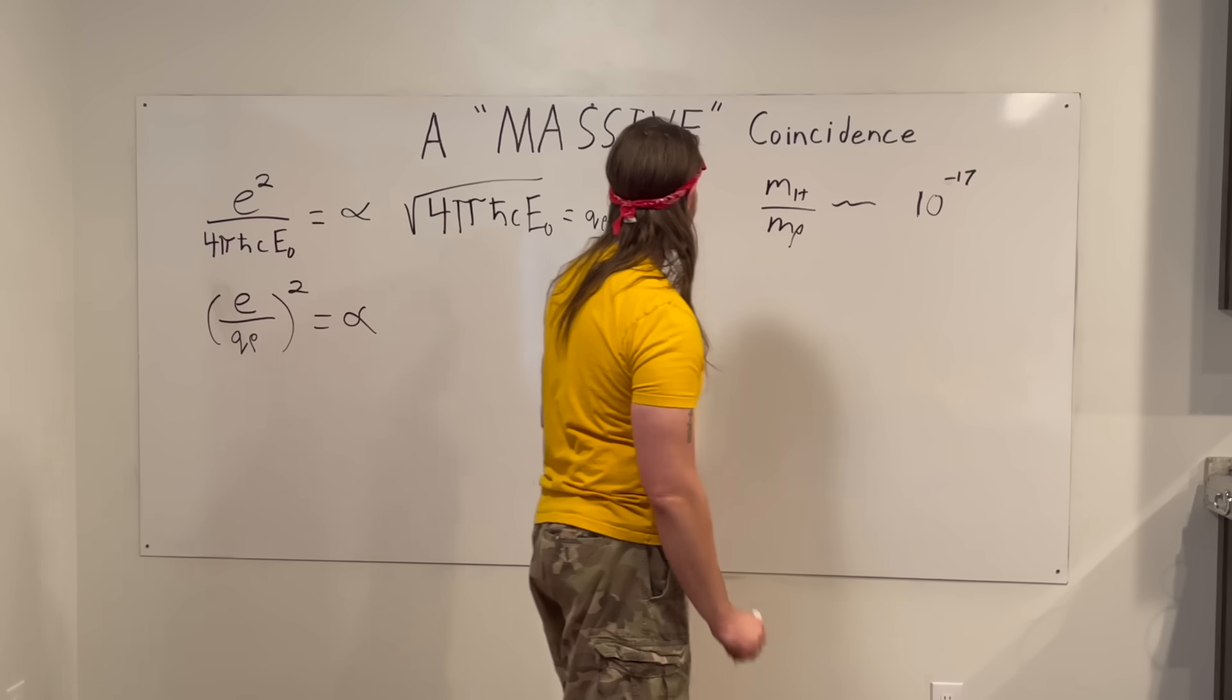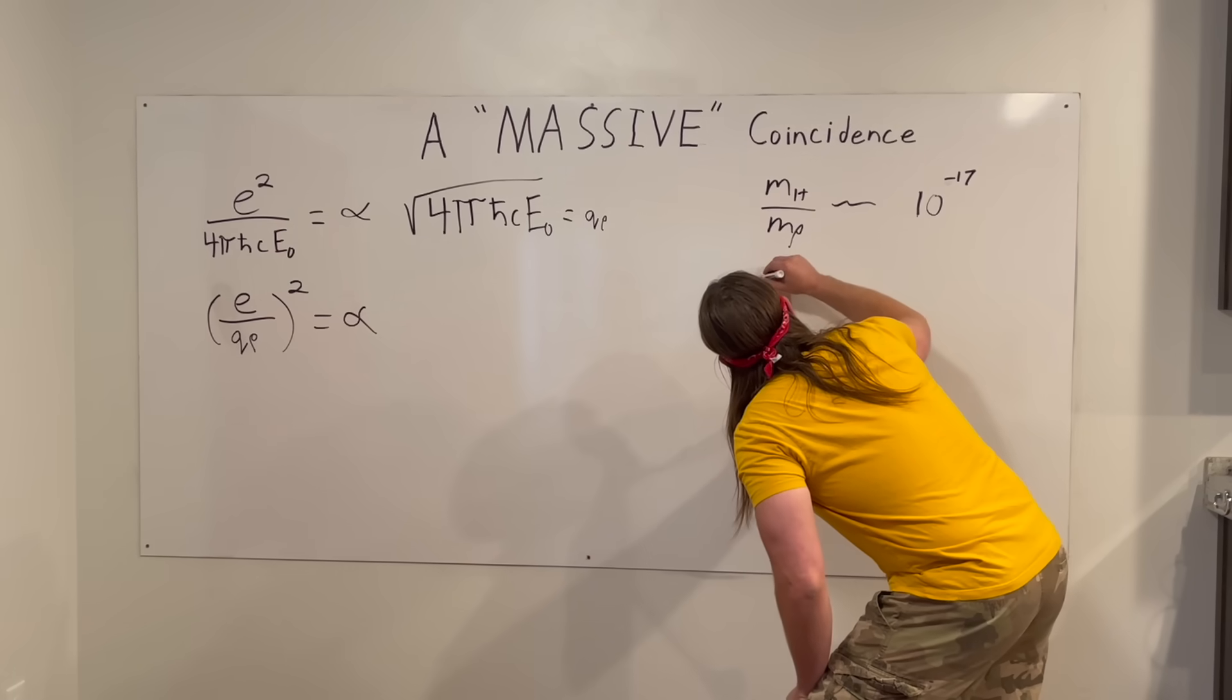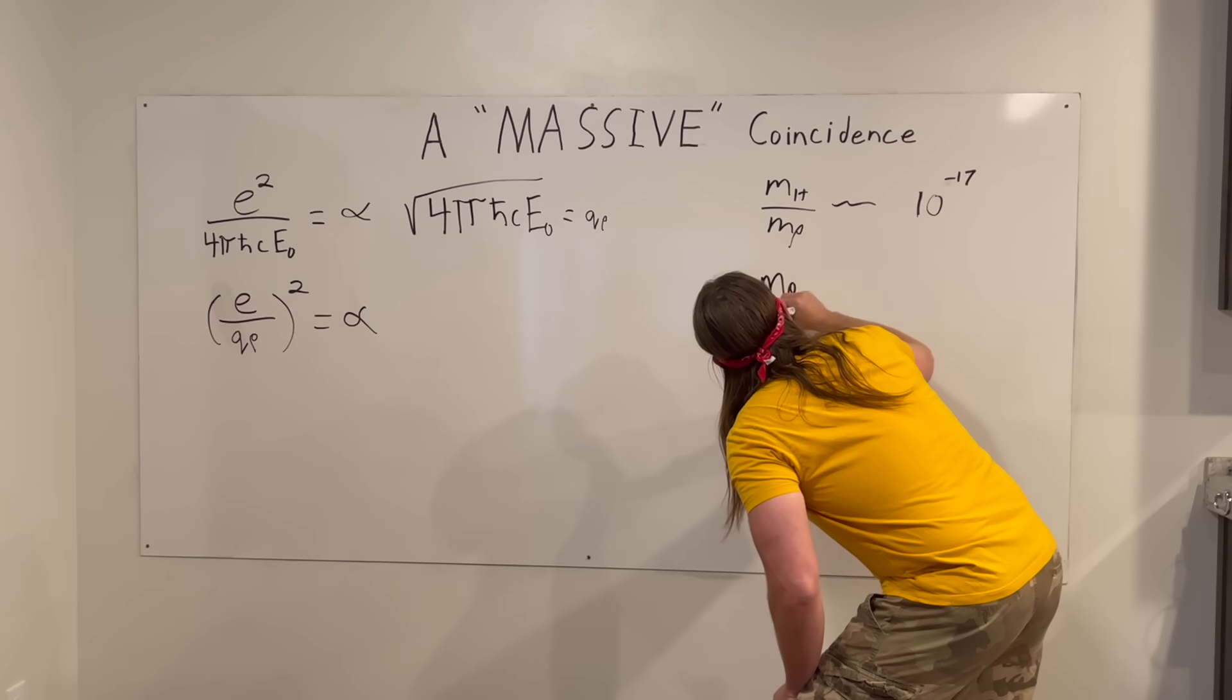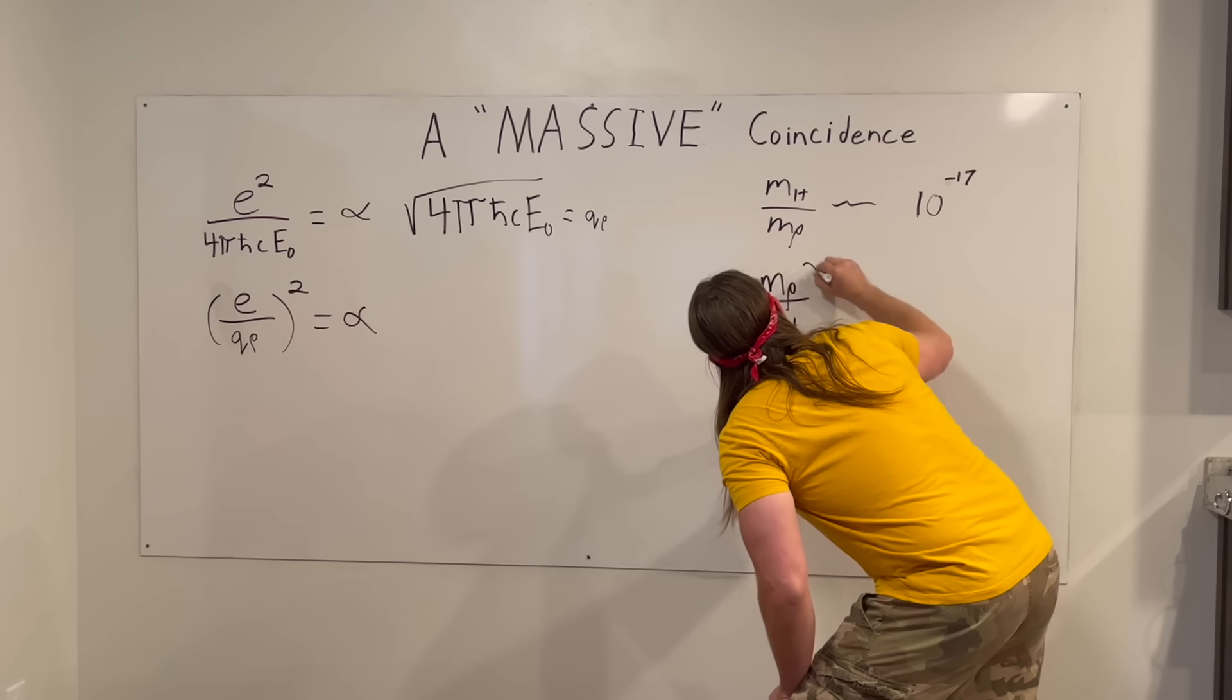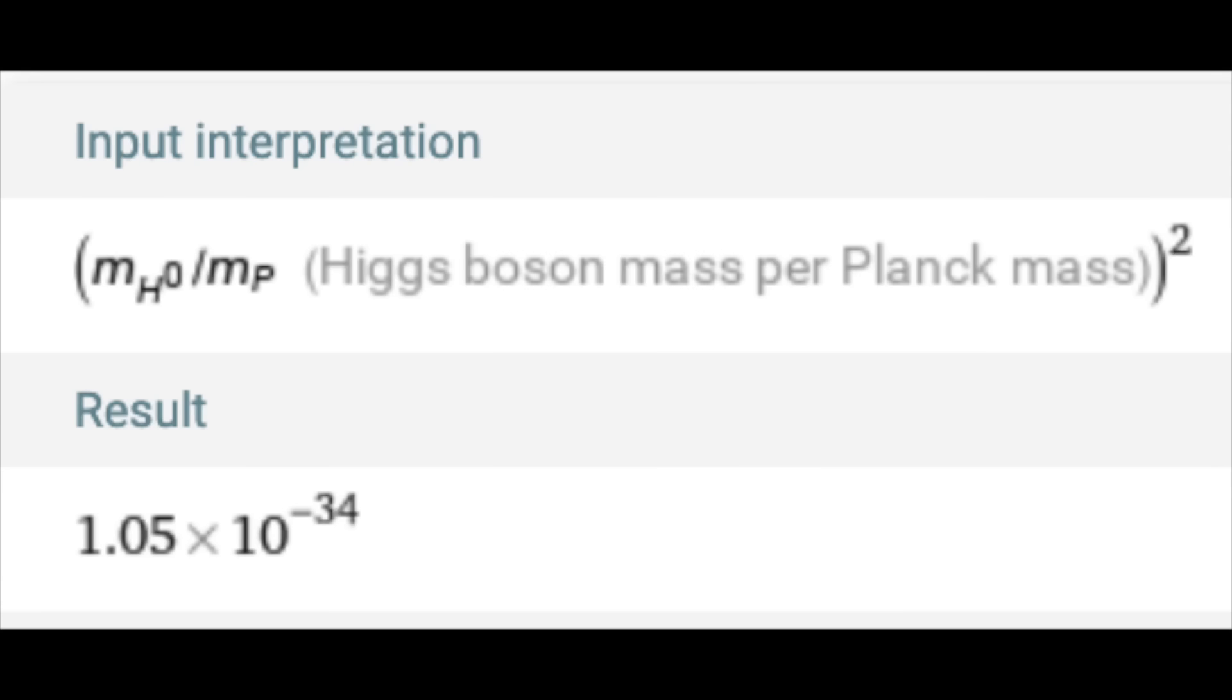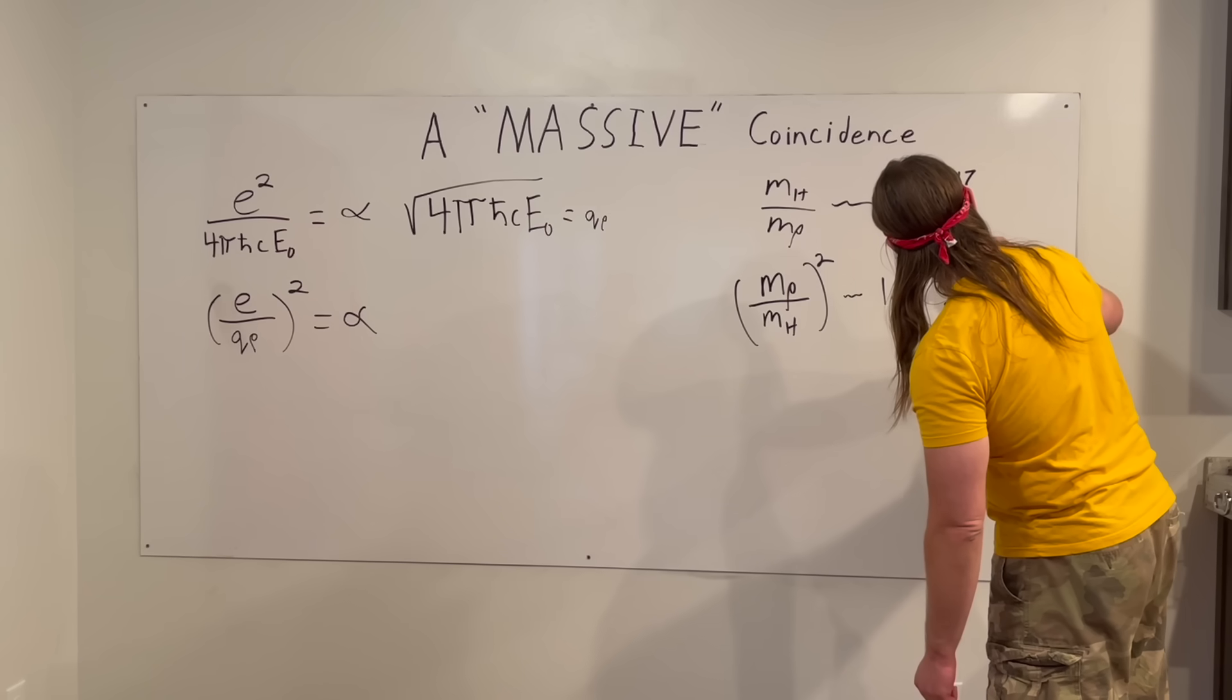That's basically what you get, 17 orders of magnitude. Okay, I don't really know how to parse that. However, we rearranged it. So we did the Planck mass over the Higgs mass, and we square it, we get out a familiar magnitude. It's 1.05 times 10 to the 34.